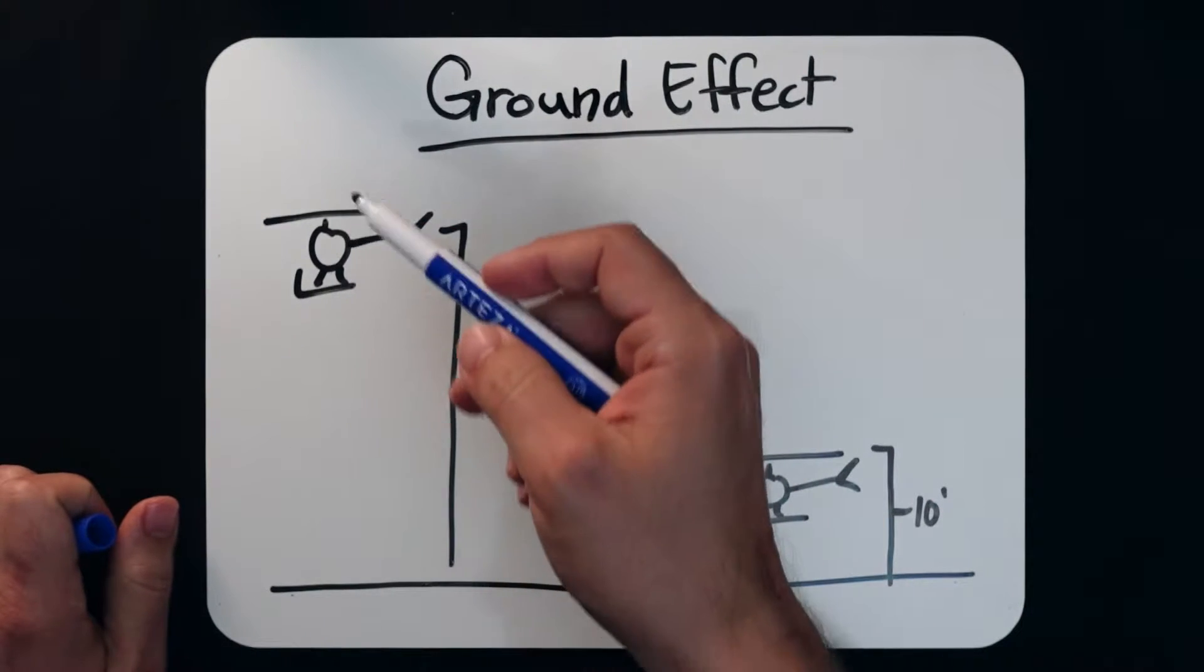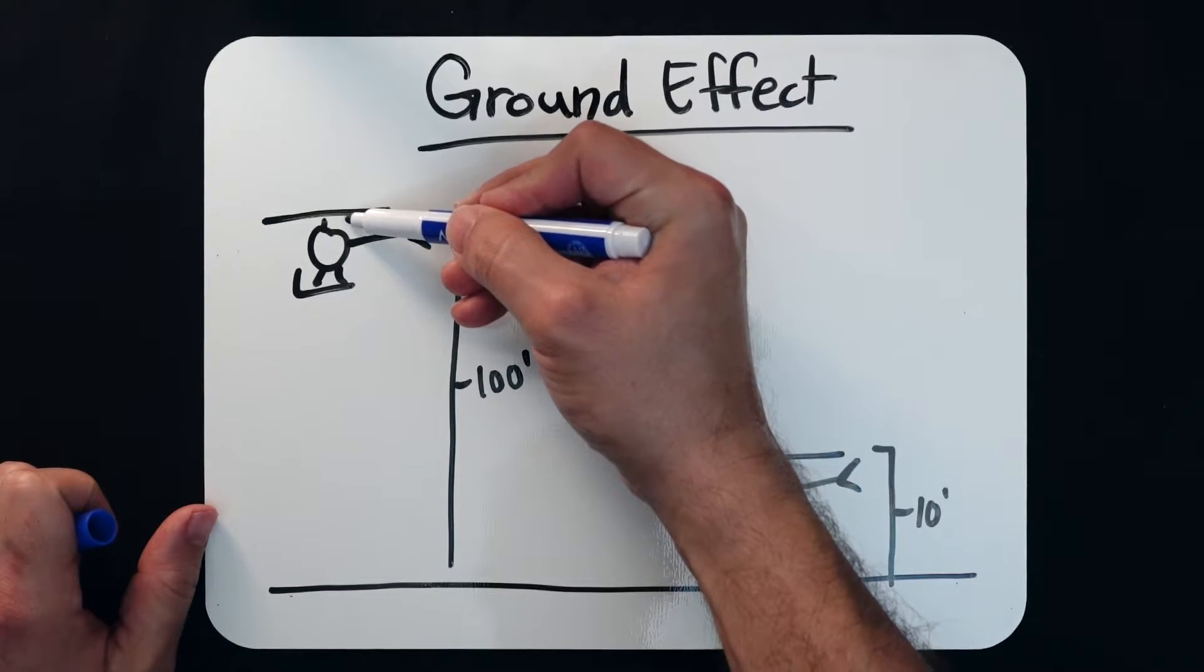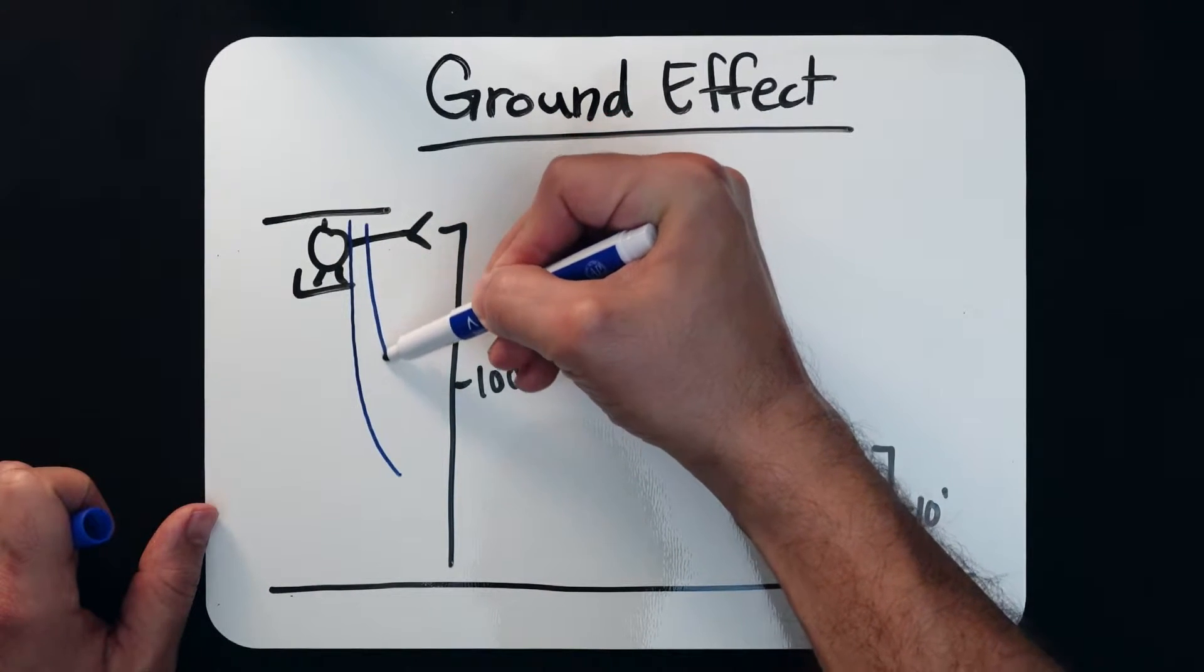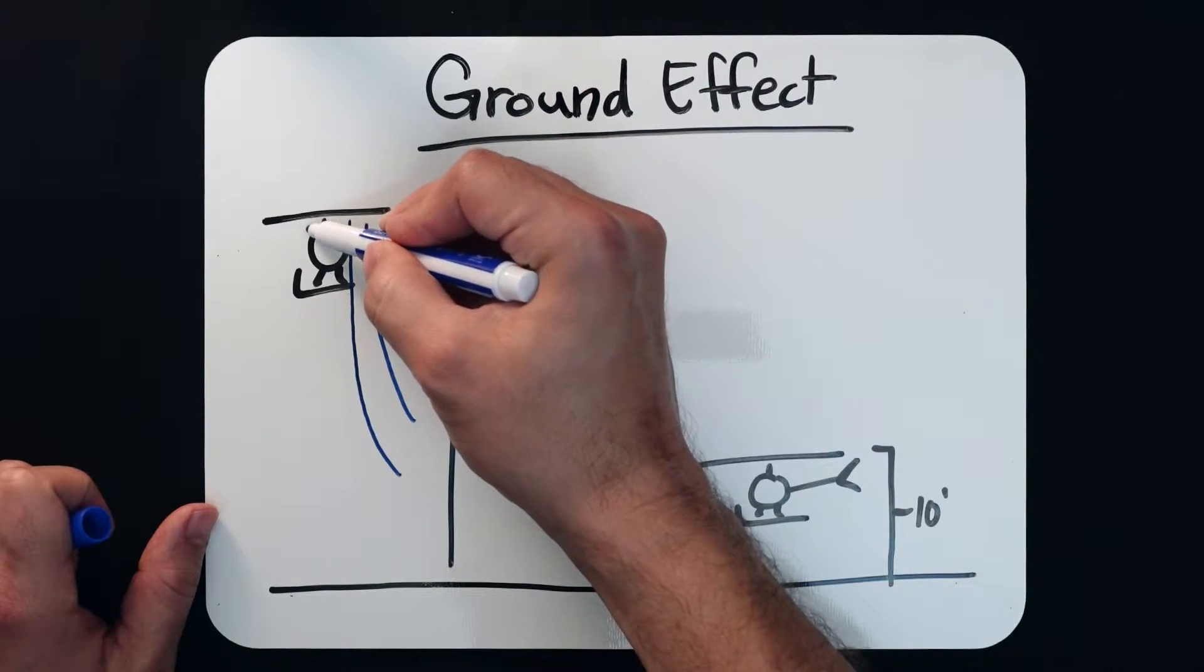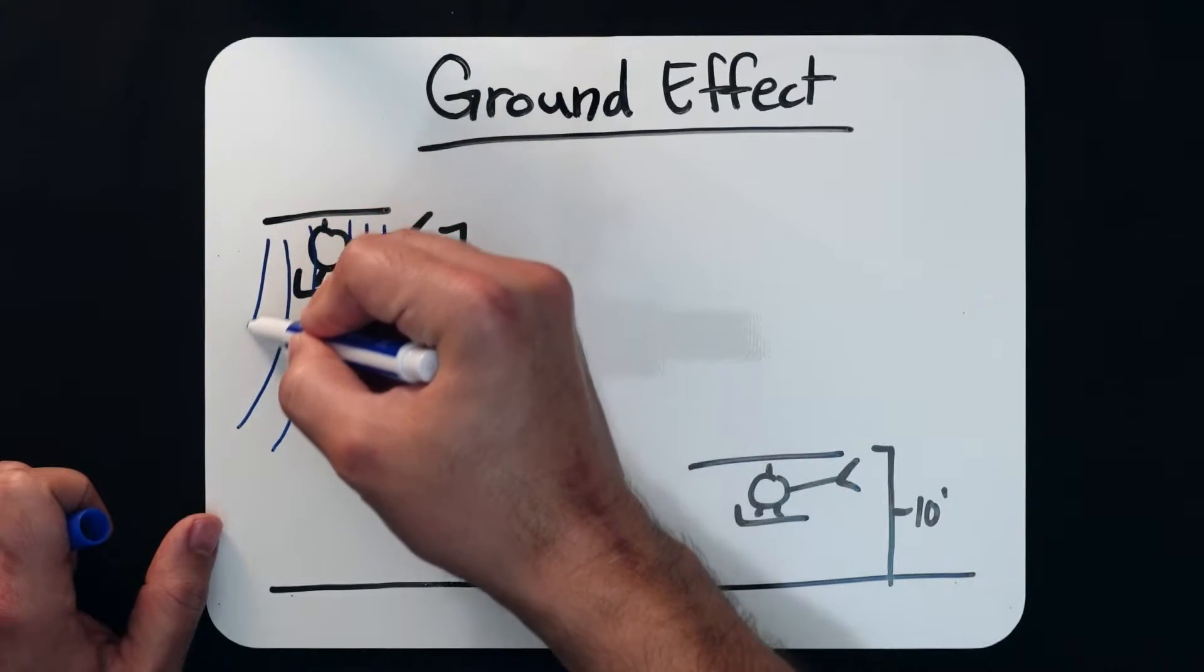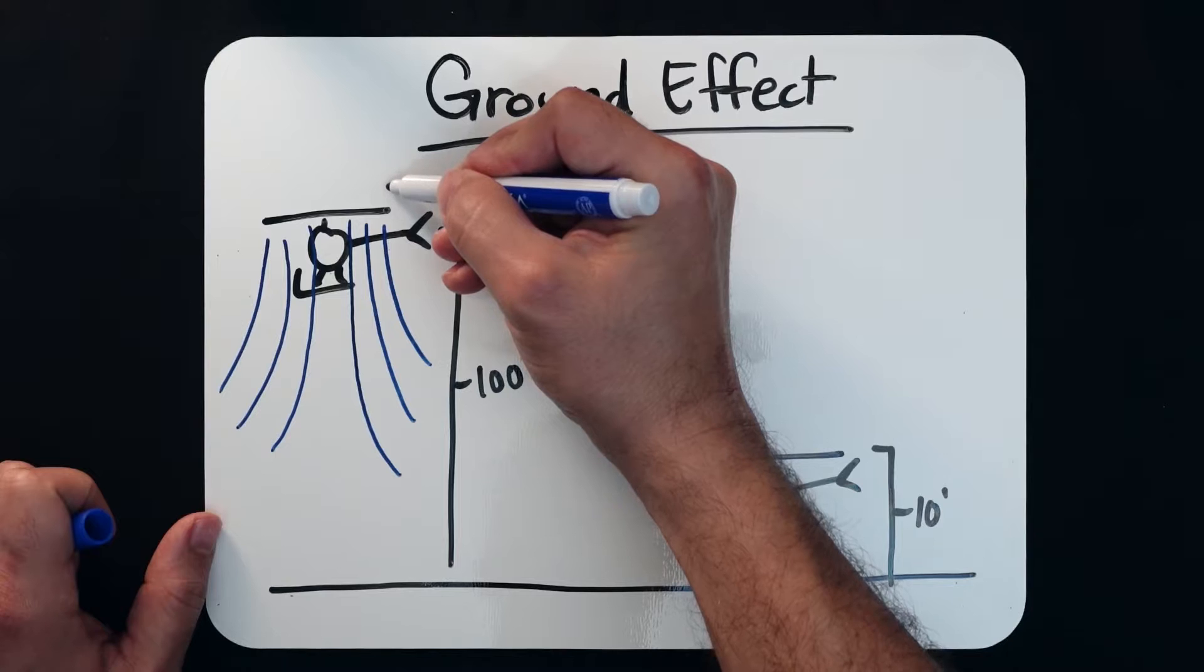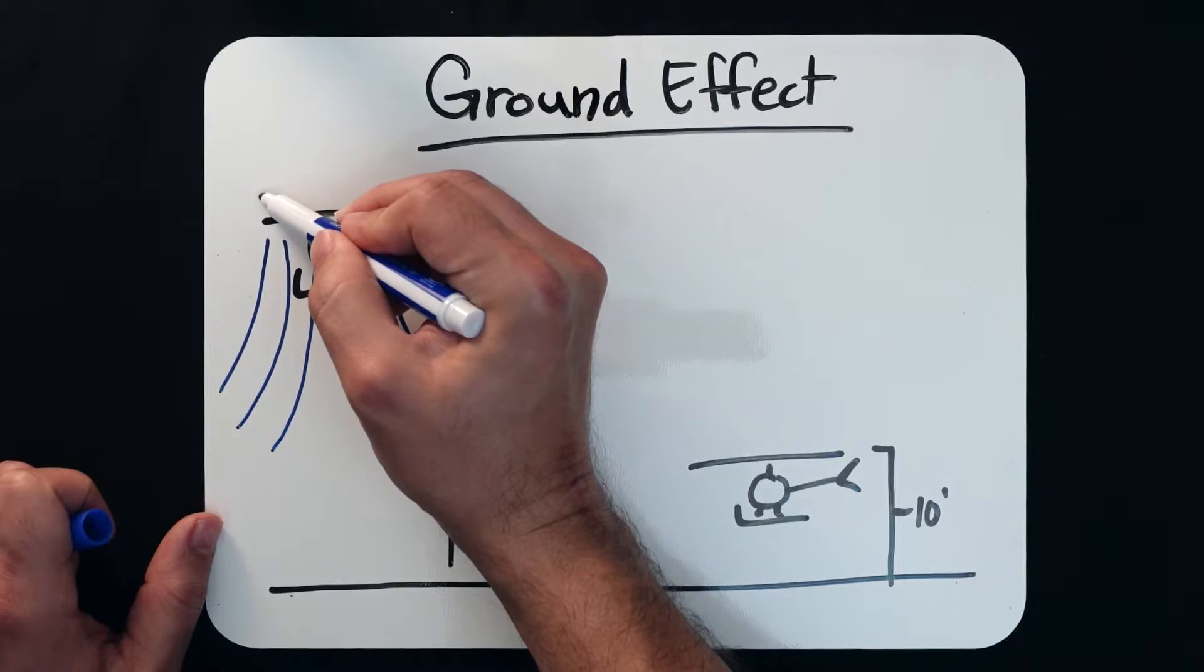So in this case, the OGE, the out of ground effect helicopter, is going to be producing this induced flow that is essentially free to just continue propagating for as long as it's able. We're going to have a very free induced flow and we also have the rotor tips, these sort of wingtip vortices that form out here and sort of this swirling pattern that forms out at the edges.